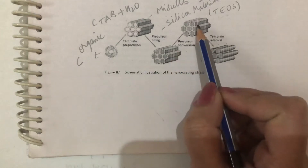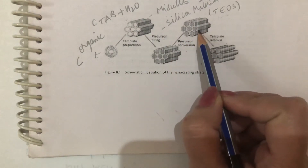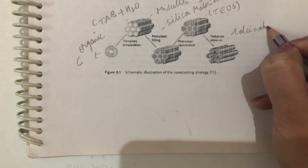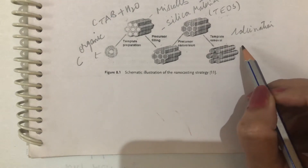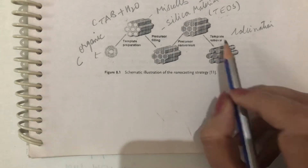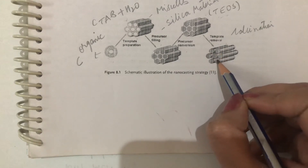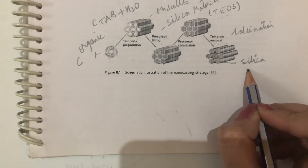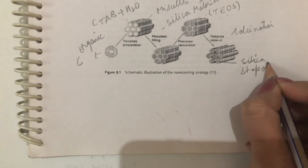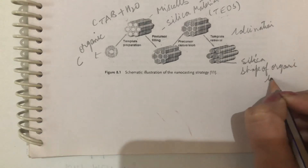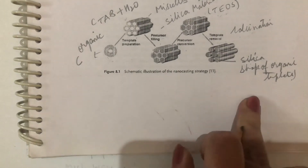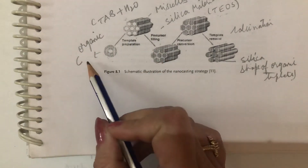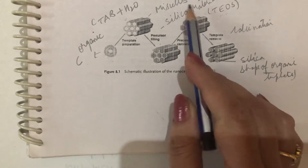Afterwards, we have to remove the template. The template can only be removed by calcination, which is heating at high temperature so that the template is removed and we are left with only the silica. At the end, we get the silica material which has the shape of the organic template.